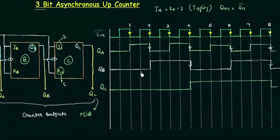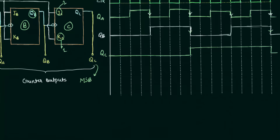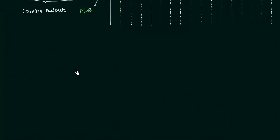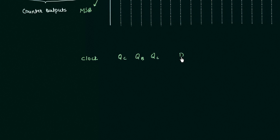QC remains high until the next falling edge of QB and then goes low. In this way we can plot QA, QB, and QC. Now we can make the table for this 3-bit asynchronous up counter and see how it is counting based on the waveforms we have just obtained. The table has columns for clock, outputs QC QB QA, and decimal equivalent.